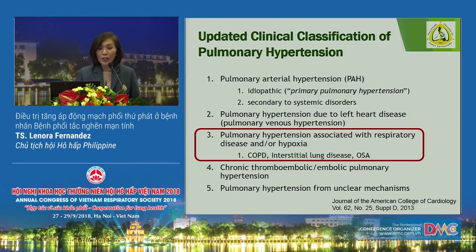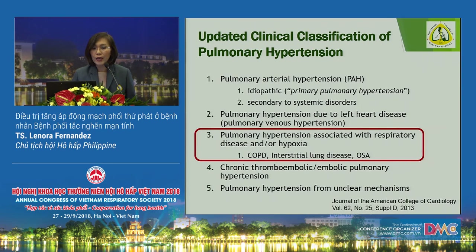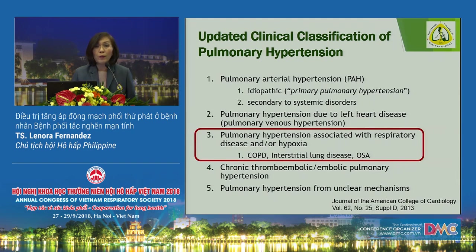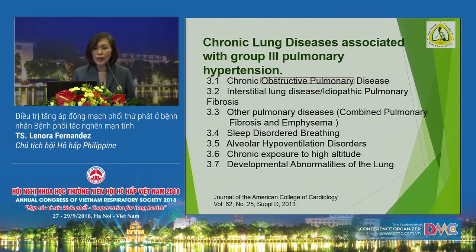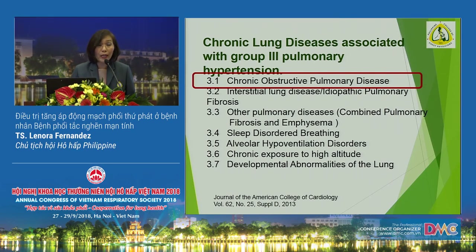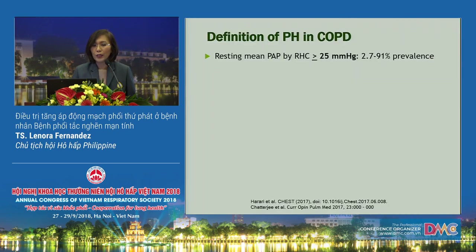We will talk about pulmonary hypertension in COPD. We have the new classification for pulmonary hypertension — we group it into five. Pulmonary hypertension due to chronic lung diseases would be group three. Group two, due to left heart disease like congestive heart failure, is still the most common cause for pulmonary hypertension. But we will be talking about group three, where COPD is the most common cause.